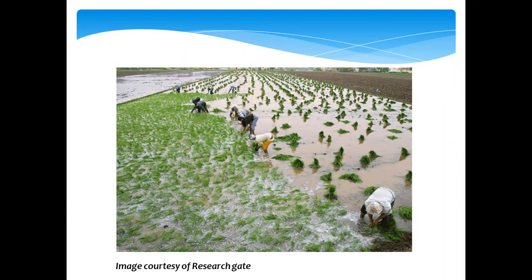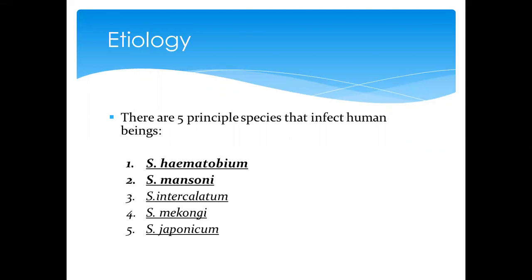This image shows farmers working on a rice plantation. You can see the stagnant water and they are working on the farm with no protection — no boots or gloves. As we'll see later, this is one of the things that actually propagates the transmission of this parasite.